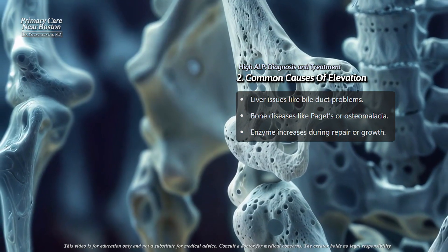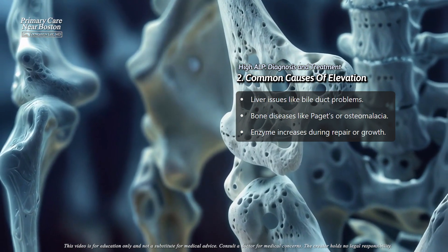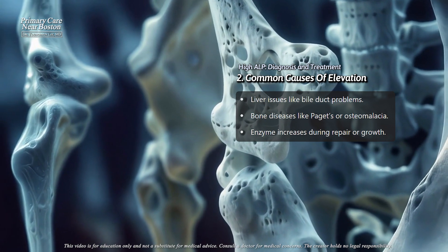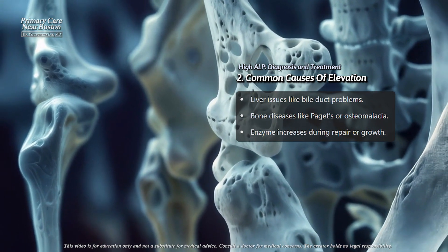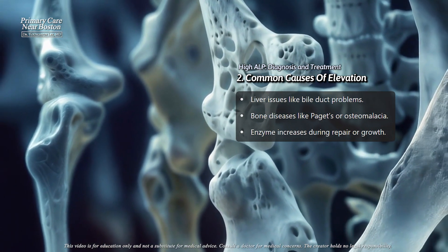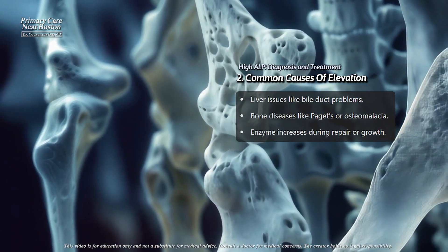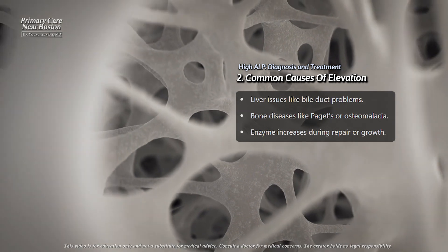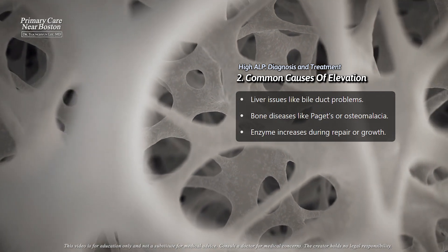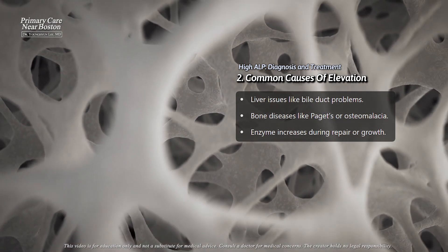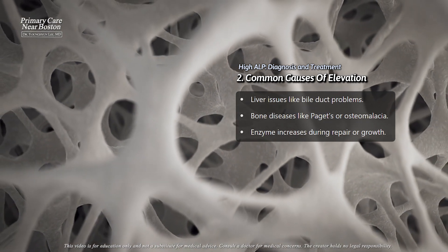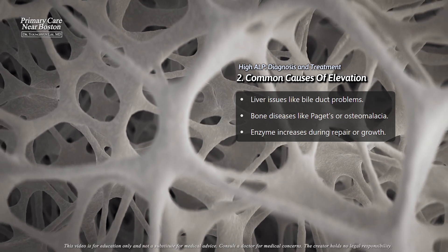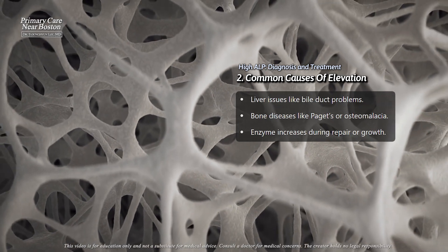Similarly, bone diseases such as Paget's disease or osteomalacia, which involves weak and poorly mineralized bones, lead to increased alkaline phosphatase because this enzyme is actively produced during bone repair or growth.